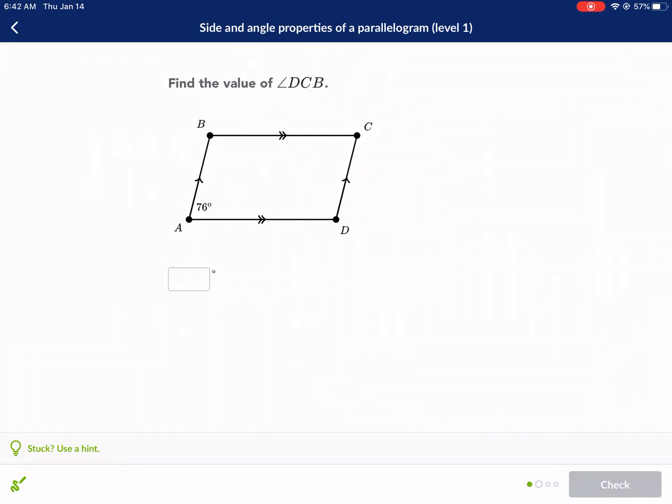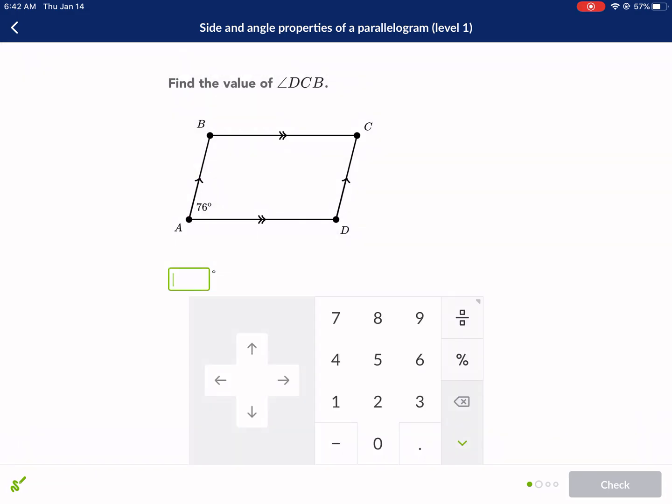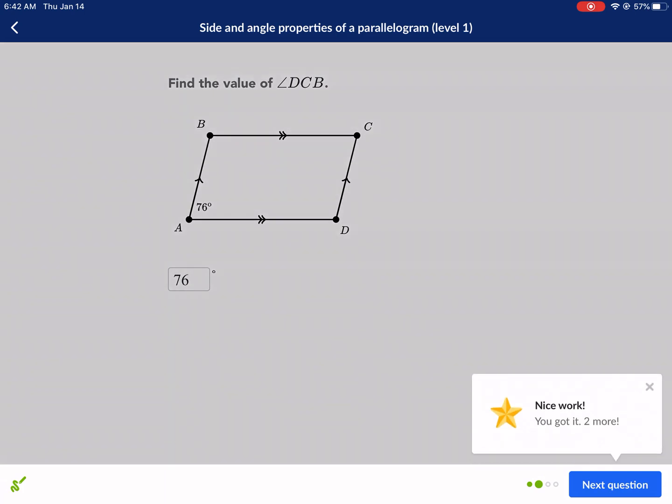Next question. Find the value of angle DCB. Let's find DCB first. DCB is here. Remember, the vertex is always the middle letter. So DCB. Now, this is a parallelogram, and the reason why I know is because opposite sides are parallel. So these have to be equal. So angle C or angle DCB has got to be the same as the angle BAD. Angle A, that's another way of saying it. So they have to be equal, 76.